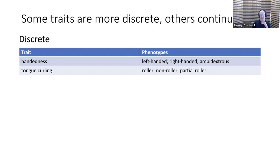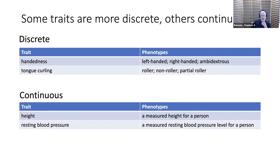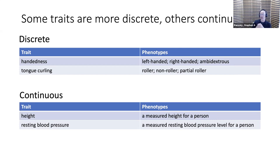Another example of a fairly discrete trait might be tongue curling — some people can roll their tongues and some cannot, with some partial rollers. But there are many other traits for humans where the best way to describe the phenotype is as a number — these are continuous traits. Things like height, weight, resting blood pressure, or fasting circulating cholesterol levels — all measured with numbers. The difference is just in how you encode the phenotype: a category for discrete, a number for continuous.